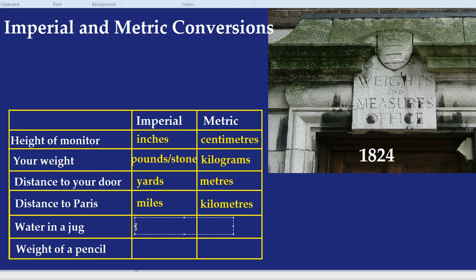How about the amount of water in a jug? What would be the imperial way of saying that? Depending on how much there was, you'd measure it in pints or gallons. What about the metric way of measuring how much water there is in a jug? That is litres.